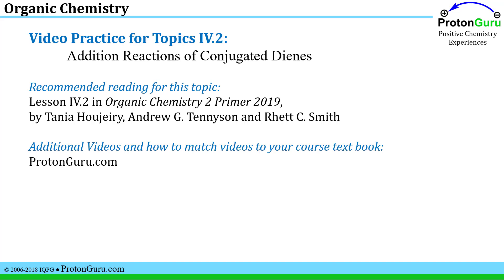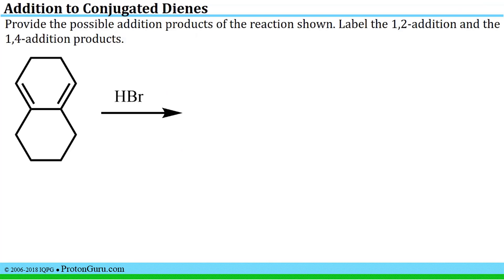This is the ProtonGuru video practice for topic 4.2. These problems will give you practice on identifying products of addition reactions of conjugated dienes. Some brief and straightforward reading to get you ready can be found in Lesson 4.2 of the Organic Chemistry Primer by Professor Hujiri and co-authors. You can find other chemistry videos at ProtonGuru.com. Our first problem asks us to provide all the possible addition products for hydrobromic acid adding to this diene, and to label the 1,2 addition and 1,4 addition product.